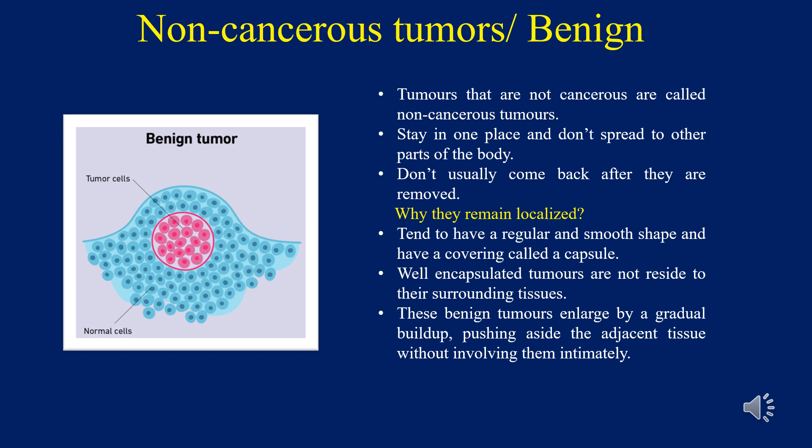The question is why do benign tumors remain localized? They tend to have a regular and smooth shape and have a covering called a capsule. Many benign tumors are enclosed by a capsule consisting of connective tissue derived from the structures immediately surrounding the tumor. Well-encapsulated tumors are not anchored to their surrounding tissues. These benign tumors enlarge by a gradual buildup, pushing aside the adjacent tissues without involving them intimately. Malignant tumors, by contrast, do not usually possess a capsule; they invade the surrounding tissues, making surgical removal more difficult or risky.